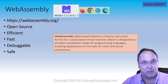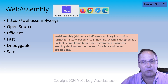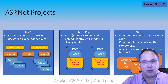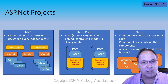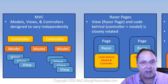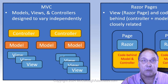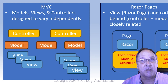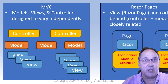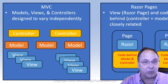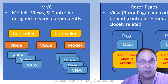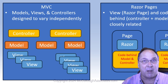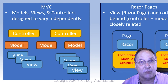One final note: I just wanted to touch on the three major ASP.NET project types. We talked about Model View Controller, where you have three different components in your project that are loosely affiliated. The project structure intentionally keeps them apart by putting the controllers, the models, and the views into different folder structures.